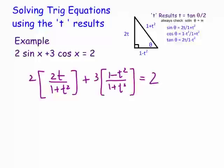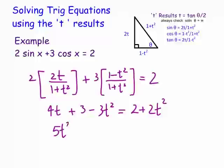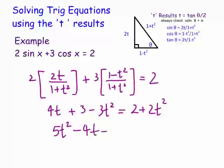Now we multiply by (1 + t²). We get 4t, plus 3(1 − t²) equals 2(1 + t²), which gives 3 − 3t² equals 2 + 2t². We form the quadratic by putting everything on one side: 5t² − 4t − 1 equals 0.